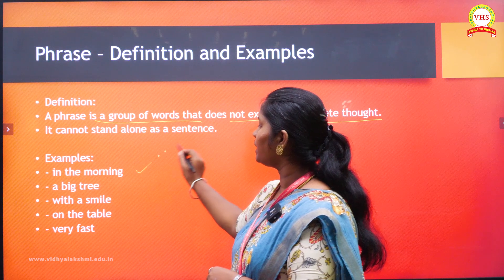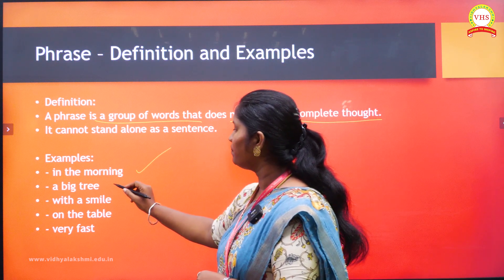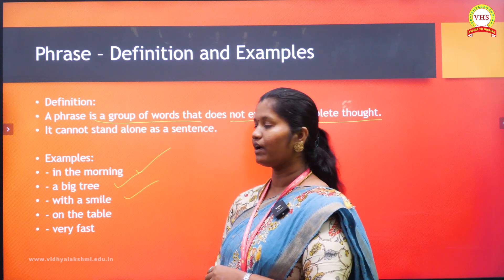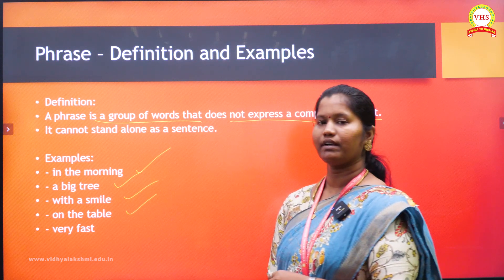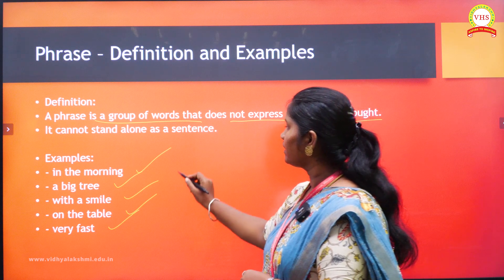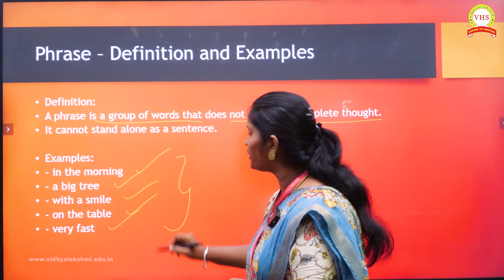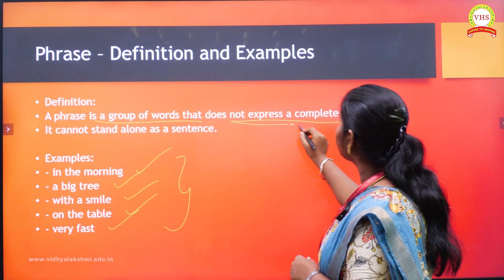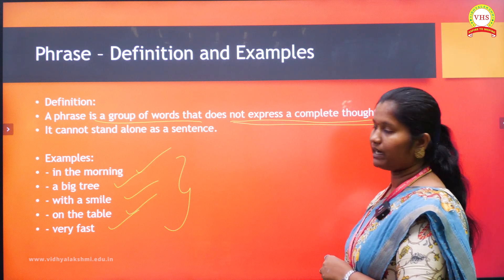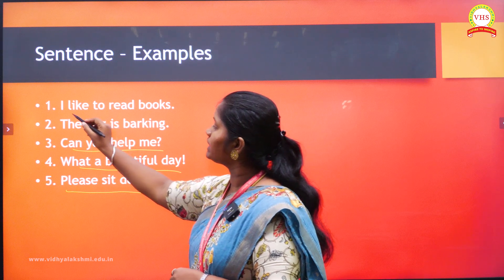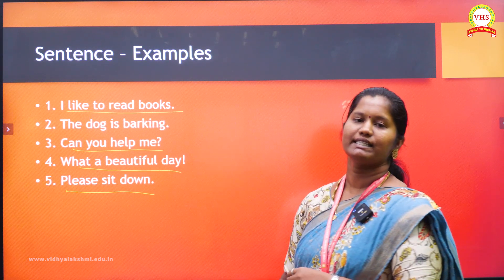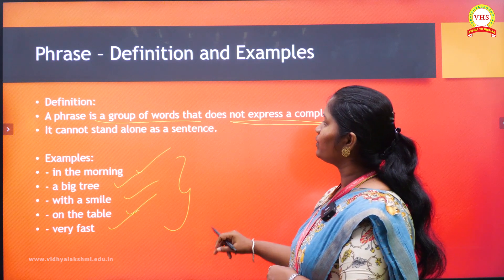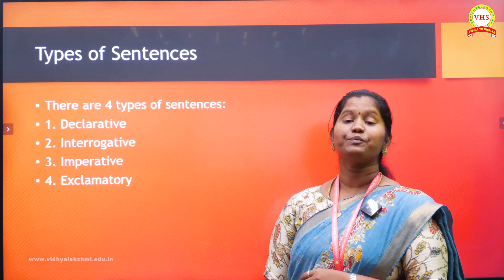For example: in the morning, a big tree, with a smile, on the table, very fast. Here, a group of words is there, but they do not express a complete thought. But a sentence makes complete sense. Clear? Hope you all understand. Now let's see the types of sentences.